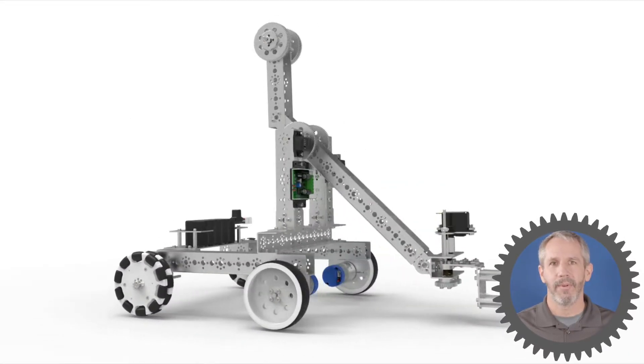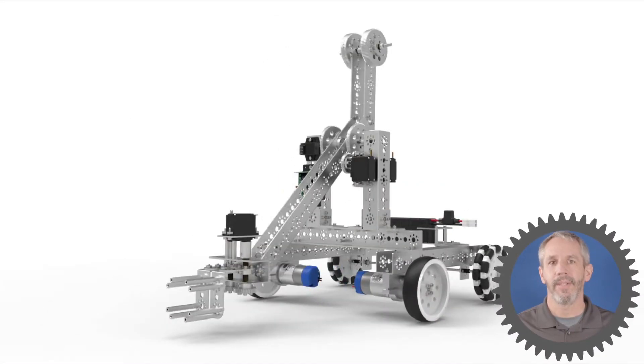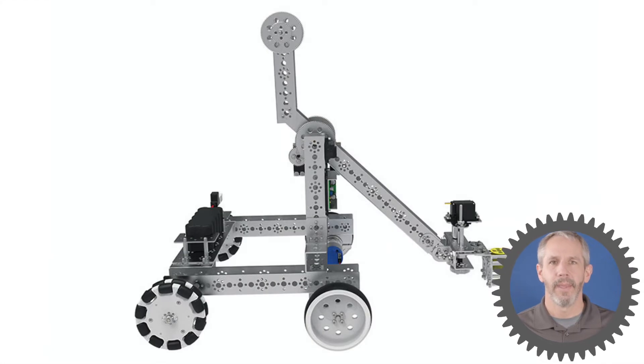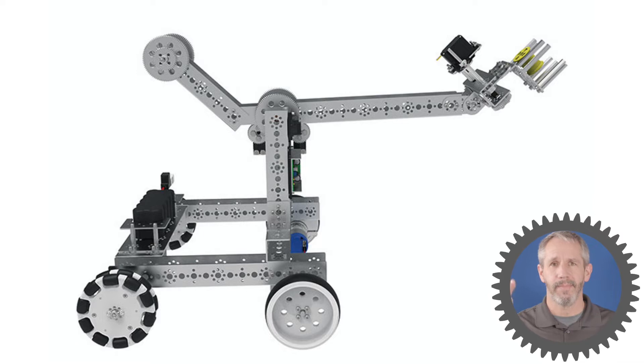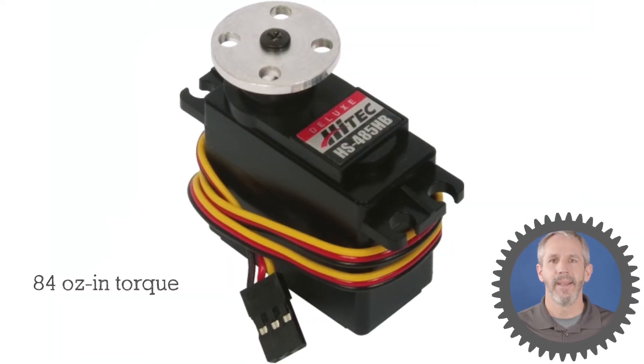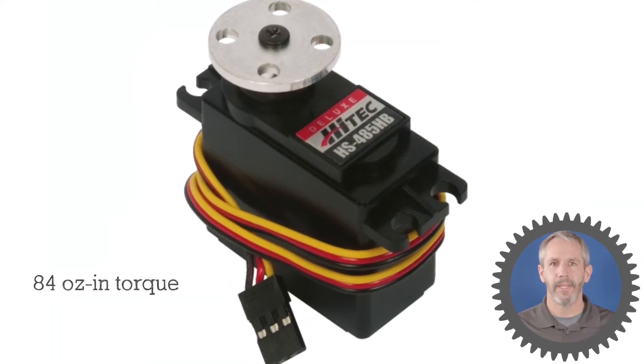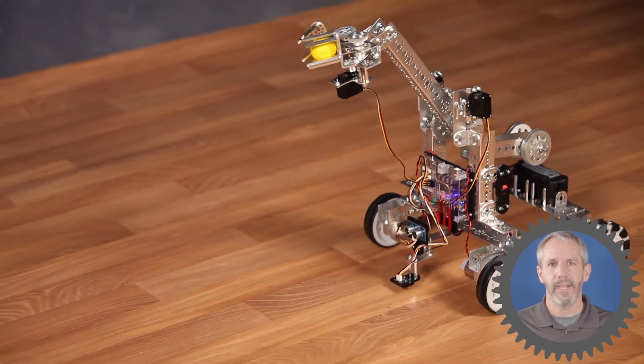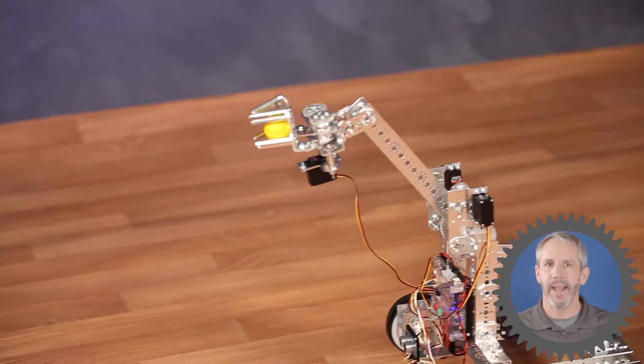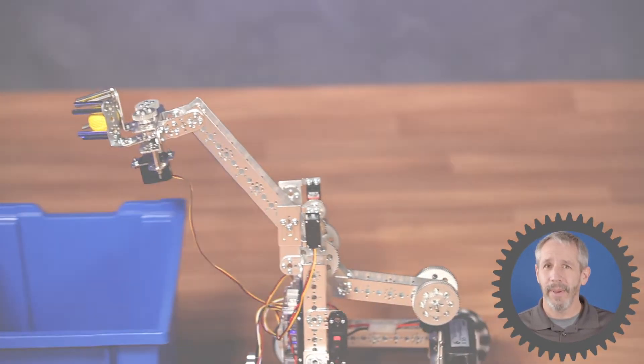This first robot example has a rotating lever arm that's driven by a standard servo. As that servo rotates back, the lever arm lifts up. A standard Tetrix Max servo has a torque rating of 84 ounce inches of weight. That means that one inch away from the center of rotation of the servo, it can lift 84 ounces of weight. That's over five pounds. That's quite a lot.